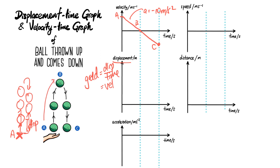From A to B, as the ball goes up, the speed is decreasing, so the gradient of the displacement-time curve gets less and less steep. At point B, the gradient is zero — no steepness — and at point A the gradient is highest since speed is maximum. From B to C, as the ball comes down, the displacement returns to its original value and the speed increases, so the curve gets steeper and steeper back down to point C.